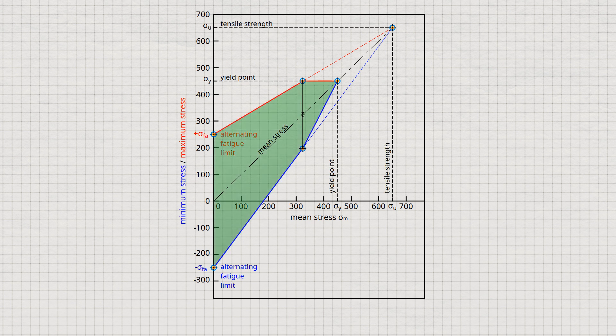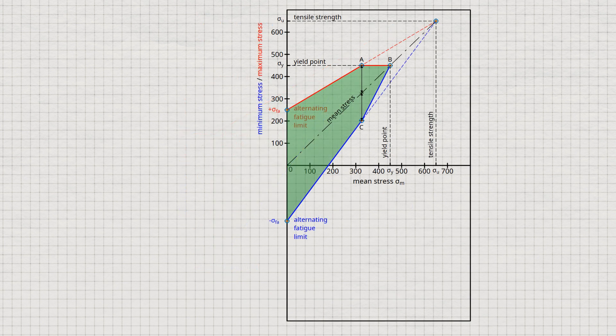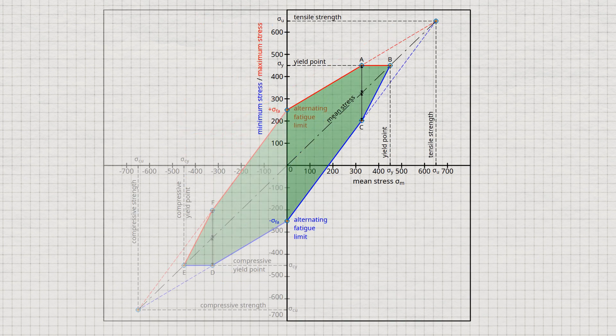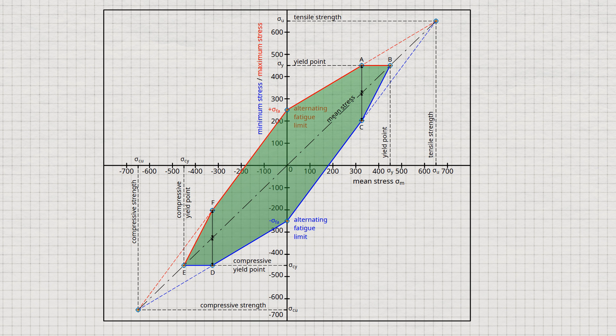For each mean stress, the Smith diagram can now be used to read off the permissible maximum and minimum stress and the stress amplitude for fatigue-resistant operation. The Smith diagram can also be extended to negative mean stress values, which means dynamic compressive loading. Instead of limiting the maximum stress by the tensile yield point, the minimum stress is now limited by the compressive yield point. Also the mean stress is limited by the compressive yield point.